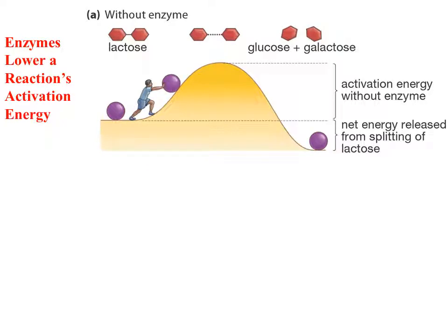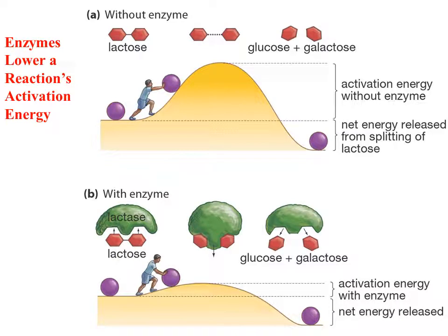Without enzyme: imagine a person pushing a wheel up a hill — they expend a lot of energy. For example, to break lactose into glucose and galactose without an enzyme, a large amount of energy is required. But with the enzyme, it carries the molecule and helps overcome this barrier, making the reaction faster and reducing the energy needed.